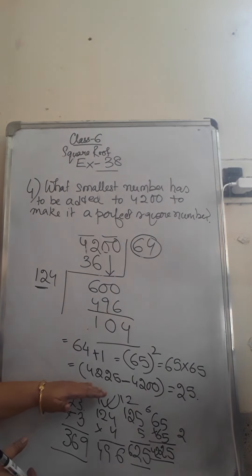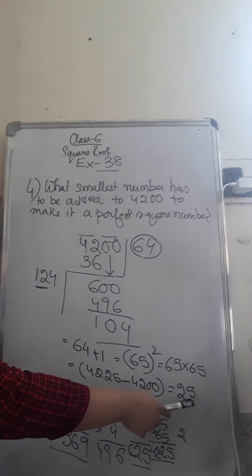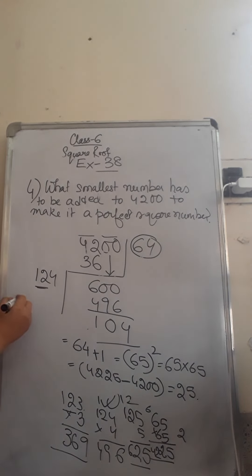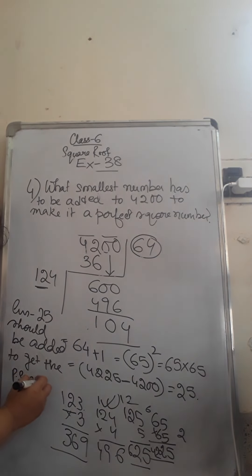Now once you know the next perfect square number which comes after 4200, that is 4225, you can straight away see that 25 must be added to go to the next perfect square number. Or you can do it by this method from the next perfect square number. If you subtract, you will get the difference. How much should be added? So the answer is 25 should be added to get the perfect square number.